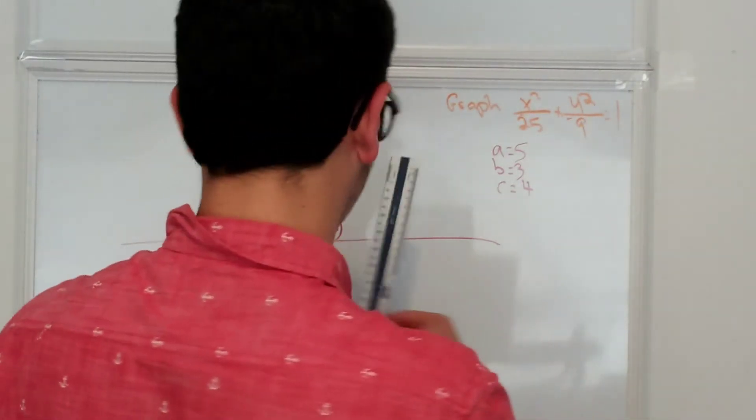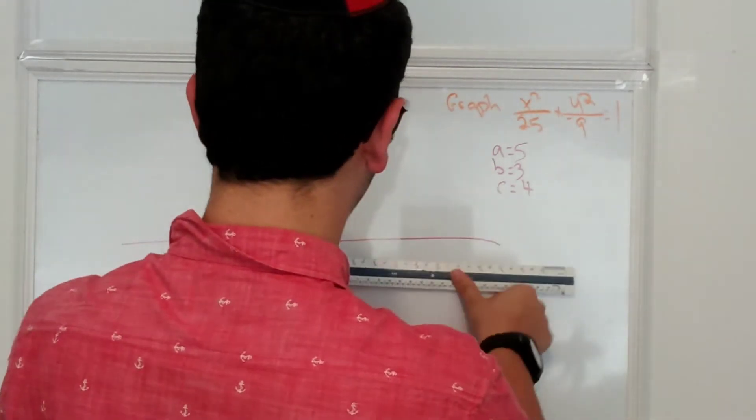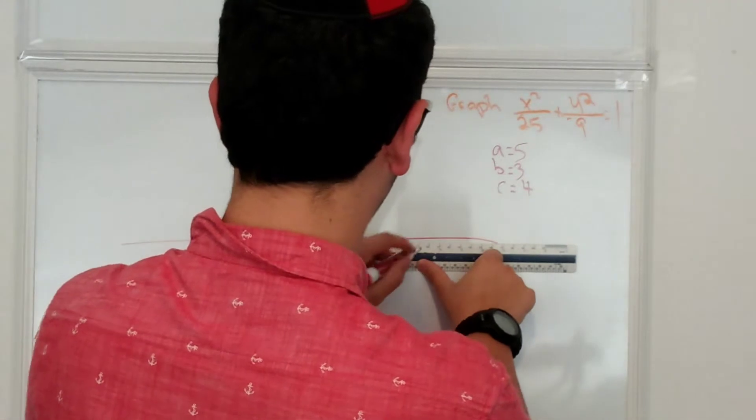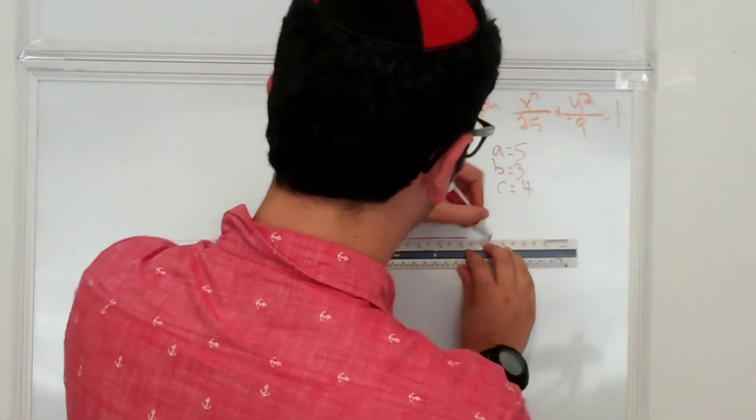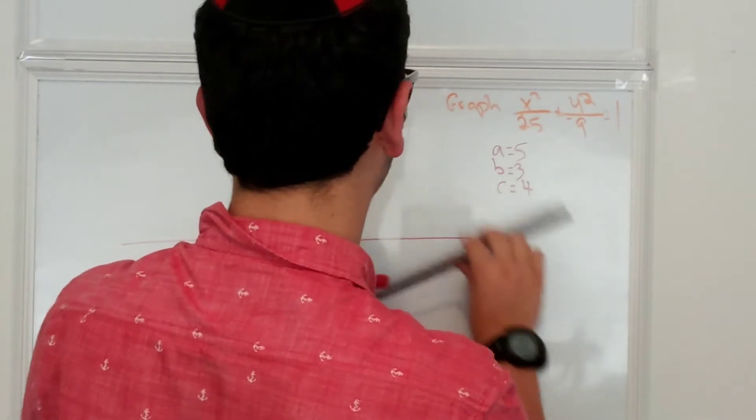Anyways, so we're going to have this 5 out. Watch this. Okay, so I'm just going to do it on a scale of 3, so it'll be 15. And then this one goes up 3.